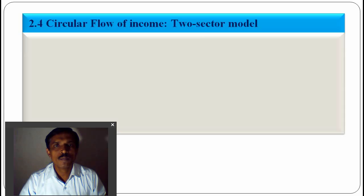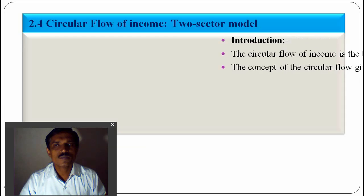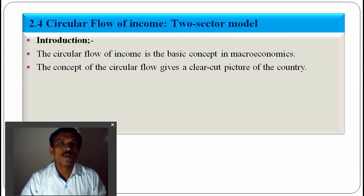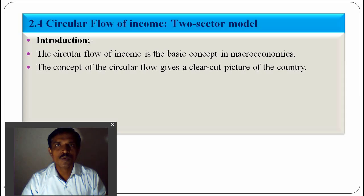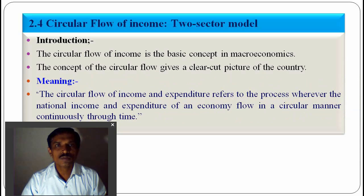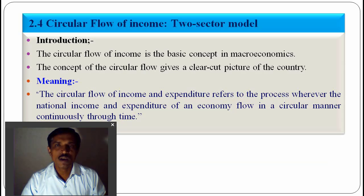We are looking at the circular flow of income, the two-sector model. The circular flow means income flows in a circular manner in the economy. The circular flow of income is a basic concept in macroeconomics. It gives a clear picture of the economy — how income circularly flows from one sector to the other, like from the firm sector to the household sector and back. The circular flow of income and expenditure refers to the process whereby national income and expenditure flow in a circular manner continuously through time.